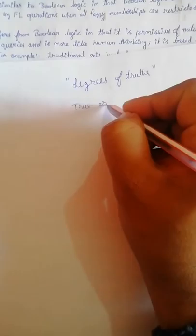Fuzzy logic is based on degrees of truth. Degrees of truth means how true or how false a statement is. In usual computation, we either have a true value or a false value, but fuzzy logic goes beyond this binary distinction.